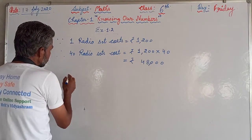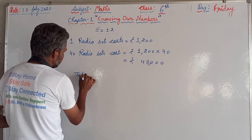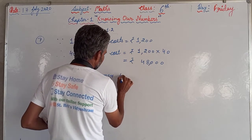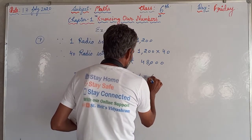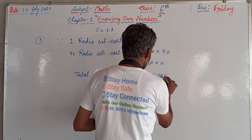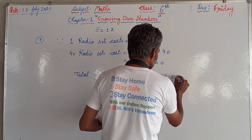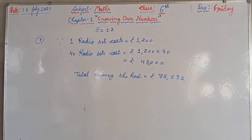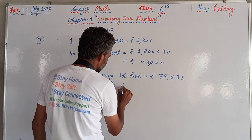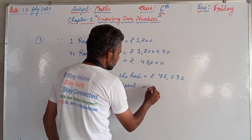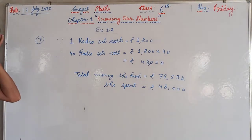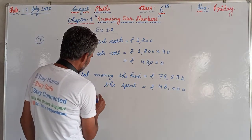The total money she had was Rs 78,592. She spent Rs 48,000 in purchasing the radio sets. Now we need to find the remaining money. For the remaining amount, we are supposed to subtract 48,000 from 78,592.